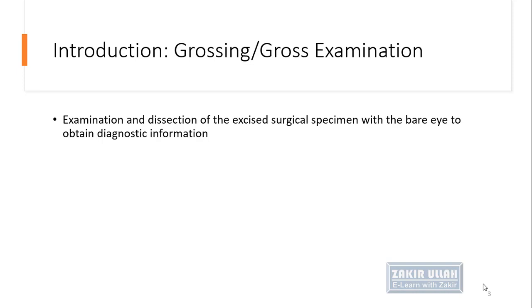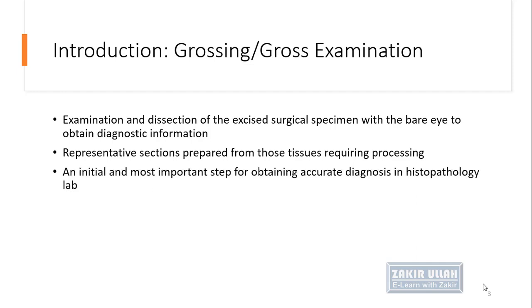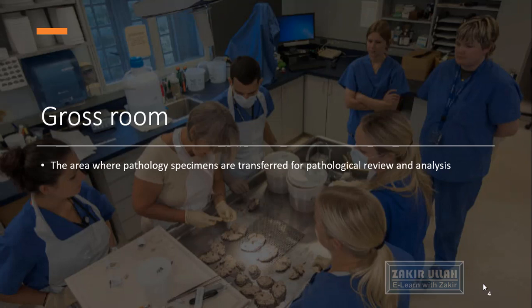Introduction: Grossing and gross examination is the examination and dissection of the excised or removed surgical specimen, which we examine with the naked eye to obtain certain diagnostic and pathologic information. During the gross examination, representative sections are prepared from the tissues which require processing. It is the initial and most important step for obtaining an accurate diagnosis in the histopathology laboratory.